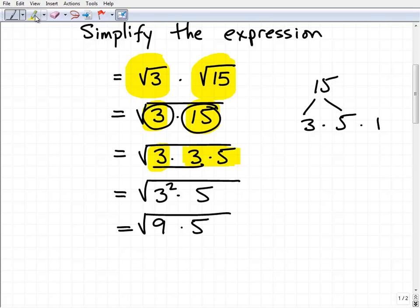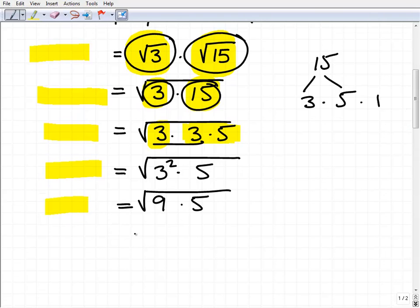So you can see here I haven't changed the problem. All of these are equivalent forms of the original problem, but I'm just using these properties and rules so I can get to a point where I can easily simplify this problem. Now the great thing about this property of taking individual factors of square roots and writing them under one big square root is I can also do that in reverse. So now I have the square root of 9 times 5. I can pull those apart. I'm going to write the square root of 9 times the square root of 5. I'm basically doing what we did originally but in reverse.